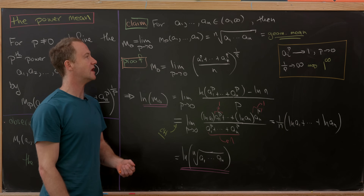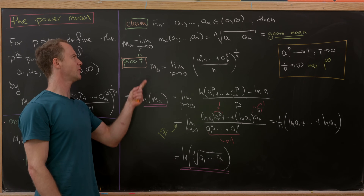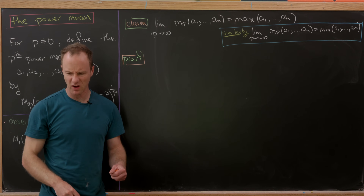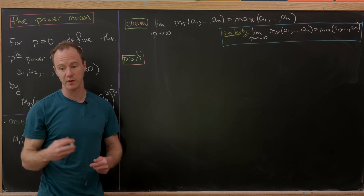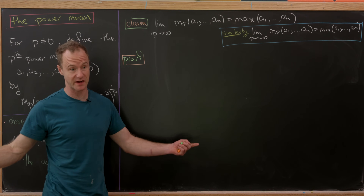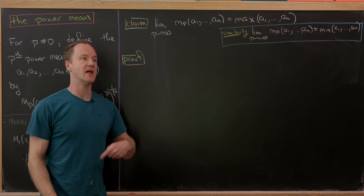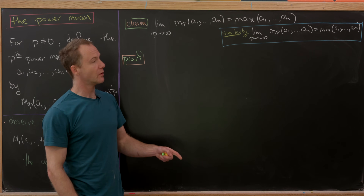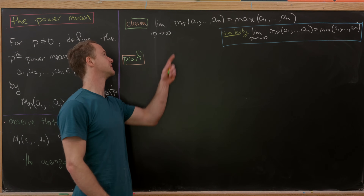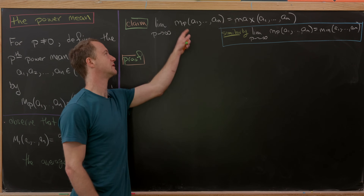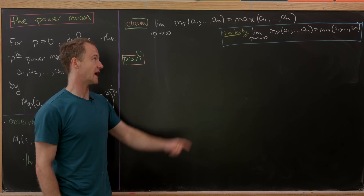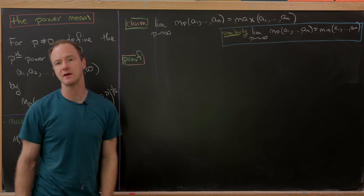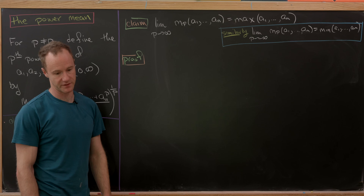Now let's look at the limit as p goes to infinity. We've shown we can get the geometric mean via a limit, and we can also get two extreme values via limits: the maximum and minimum. We'll show that lim_{p→∞} m_p(a₁,...,aₙ) = max(a₁,...,aₙ), and similarly lim_{p→−∞} m_p = min(a₁,...,aₙ).